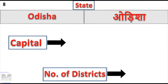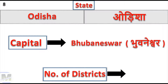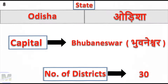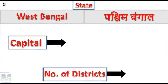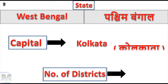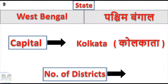Odisha: Capital Bhubaneswar, Number of Districts: 30. West Bengal: Capital Kolkata, Number of Districts: 23.